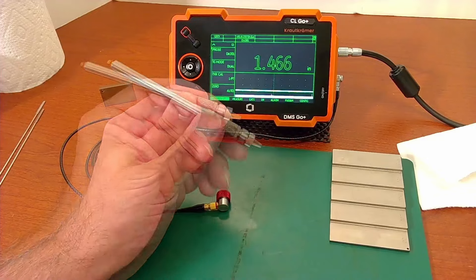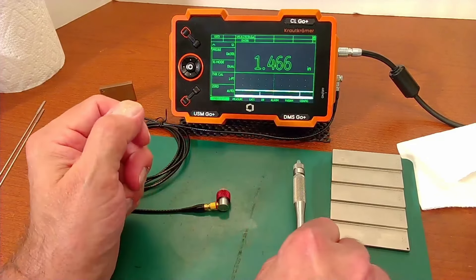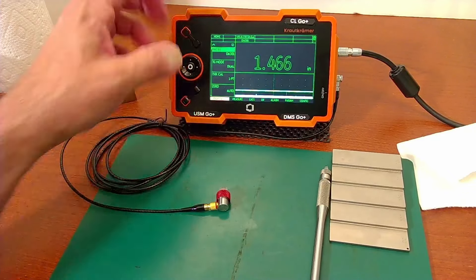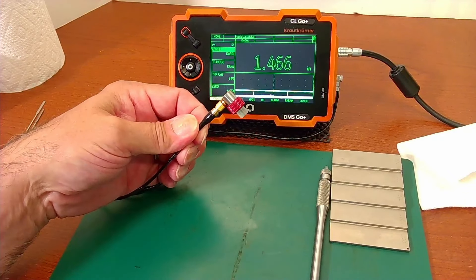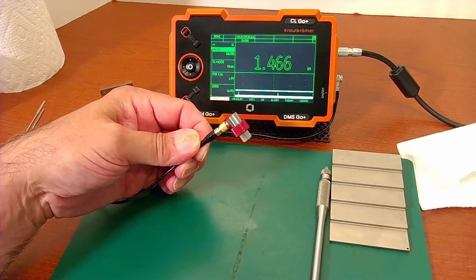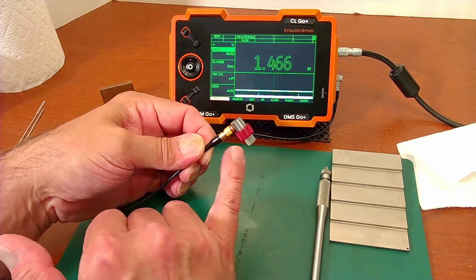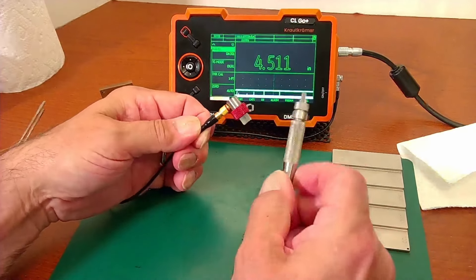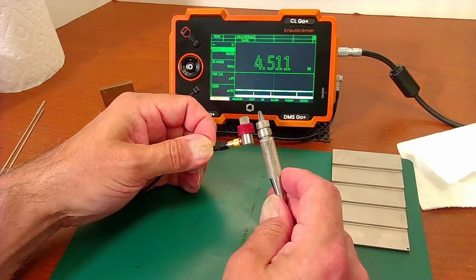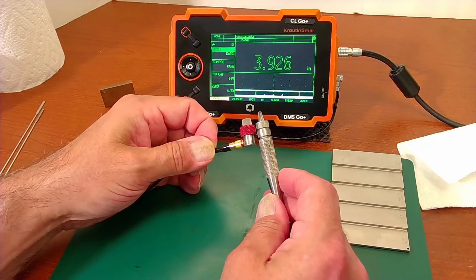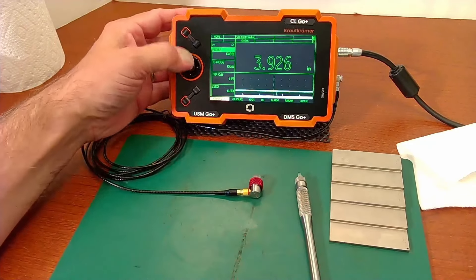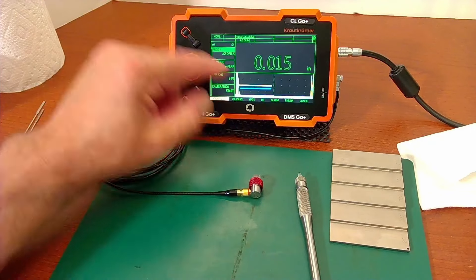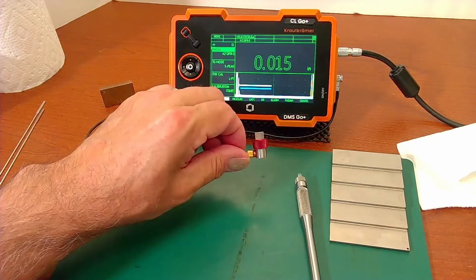The first thing we're going to do is pick a probe that is close in design. One of my favorite probes for thinner materials on the DMS Go is the Alpha 2 DFR, our classic delay tip probe. This is close conceptually to the K-Pen. So let's go ahead and select the Alpha 2 DFR short, the shorter delay tip, as a starting point.